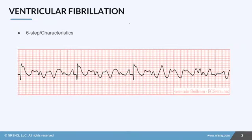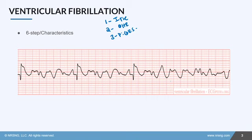The six-step method is actually pretty simple because there is not really much you can measure. The rhythm is going to be irregular. Heart rate — there is no heart rate; it is just quivering erratically, so there is no way to measure it. The P-to-QRS ratio is not measurable because there are no P waves and no QRS complexes. The PR interval is also not measurable.